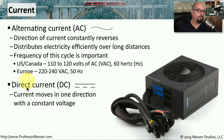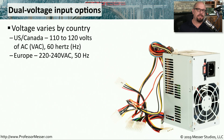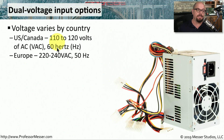The other type of current is direct current, or DC, often shown as a single line on top with smaller lines underneath. The primary characteristic of direct current is that it moves in a single direction with a constant voltage. So you can already see there are differences in how alternating current is used in different parts of the world, with the United States and Canada using one type of voltage and frequency, and Europe using a completely different set.